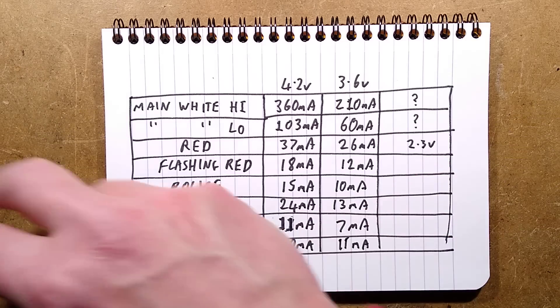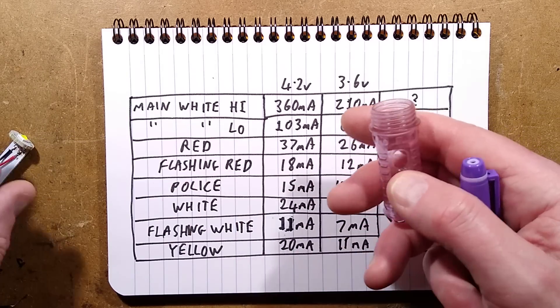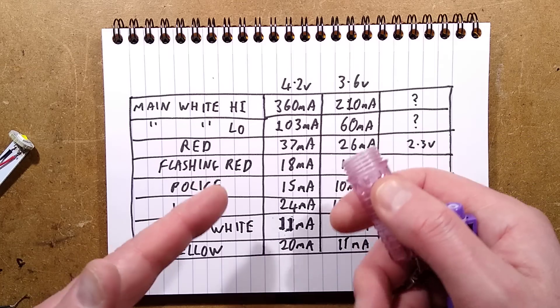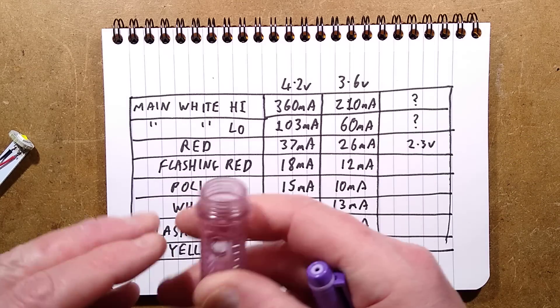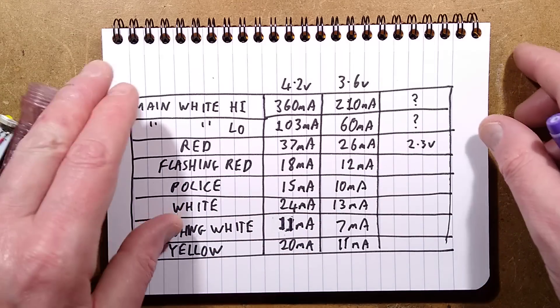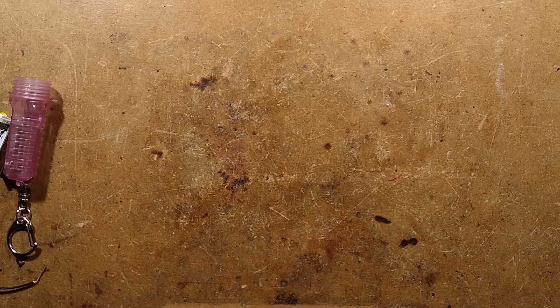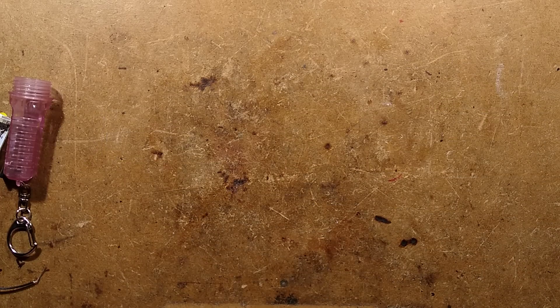But if you're using this as a flashlight, torch, whatever you want to call it, at that point it's going to be very dim. It was only really an issue if you just left it on continually accidentally, which you could do. And that is more or less it.